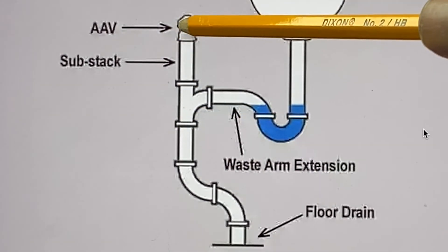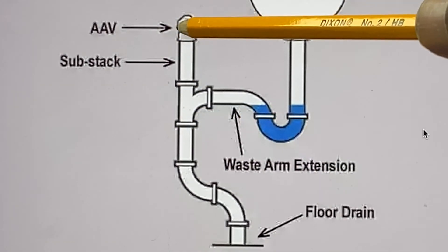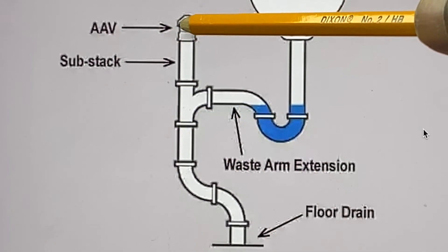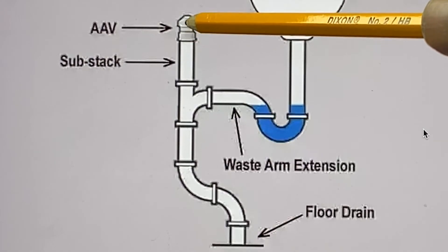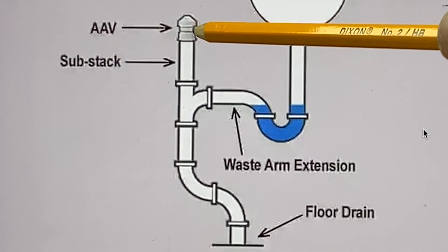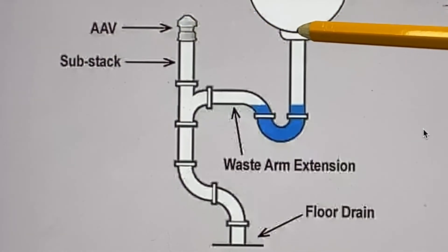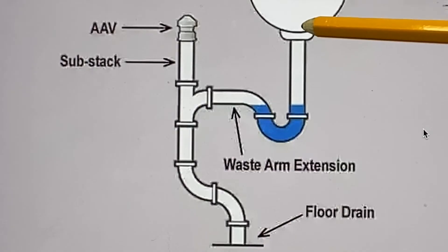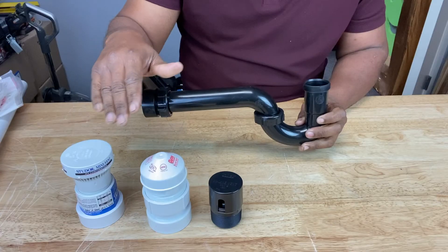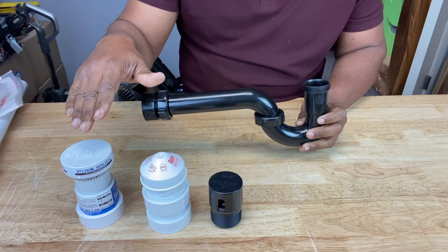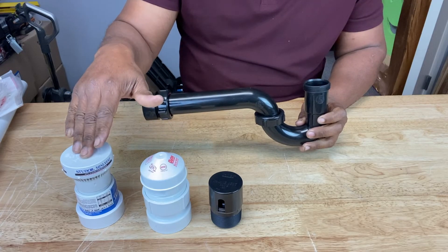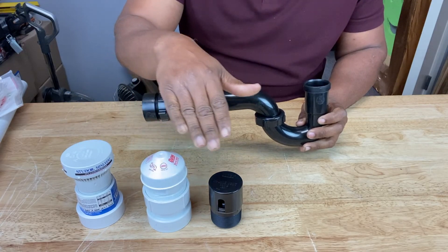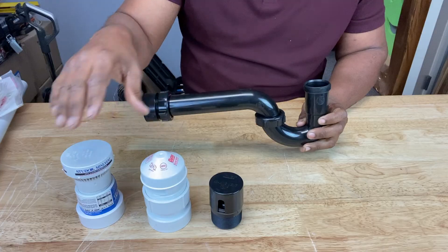An important note about AAVs or air admittance valves: they have to be elevated above the level of the sink drain in order to prevent overflow or backup. Here are some examples of air admittance valves that you can get at your local hardware store.